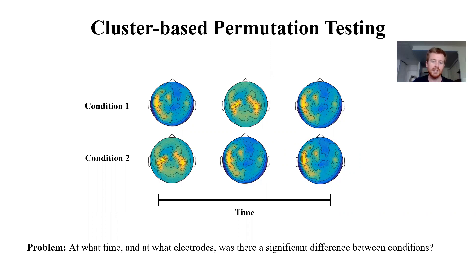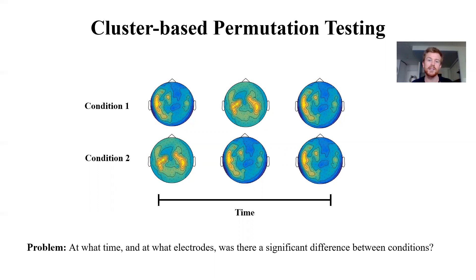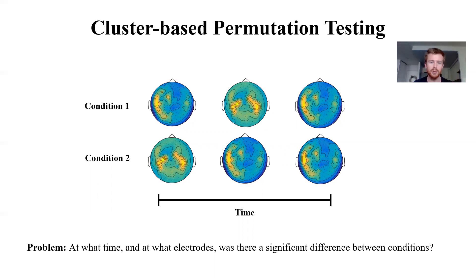If you tried to look at every single point in time and every single electrode and use a t-test to see whether or not there was a difference, then even if there were no true differences, you're going to find a lot of effects with a p-value greater than some threshold. Because we're making so many comparisons, the simplest approach is to use a more stringent p-value, but with something like a thousand time points and a hundred channels, that would make us never find any effects — we'd make lots of type two errors. So we want an approach that balances that type one and type two error rate.